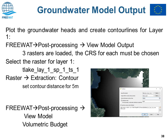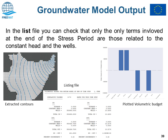Once the model runs, you can import the model results through FreeWatt post-processing, importing results as a raster and extracting contours — for example at five-meter intervals. You can also look at the volumetric budget of that first simulation. The extracted contours and the listing file — the MODFLOW listing file giving a summary of budgets — will be displayed, and those budgets are plotted in FreeWatt when you select to view the volumetric budgets.